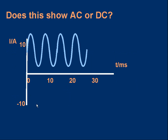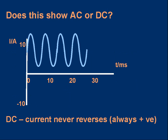Here's a question: does the graph show AC or DC? It's actually a trick question — the answer is DC. Many people associate that wave shape with alternating current, and it can be, but as drawn the current is always positive; it never goes to zero or negative. So it represents a direct current whose size is changing — getting bigger and smaller — but always flowing in the same direction.